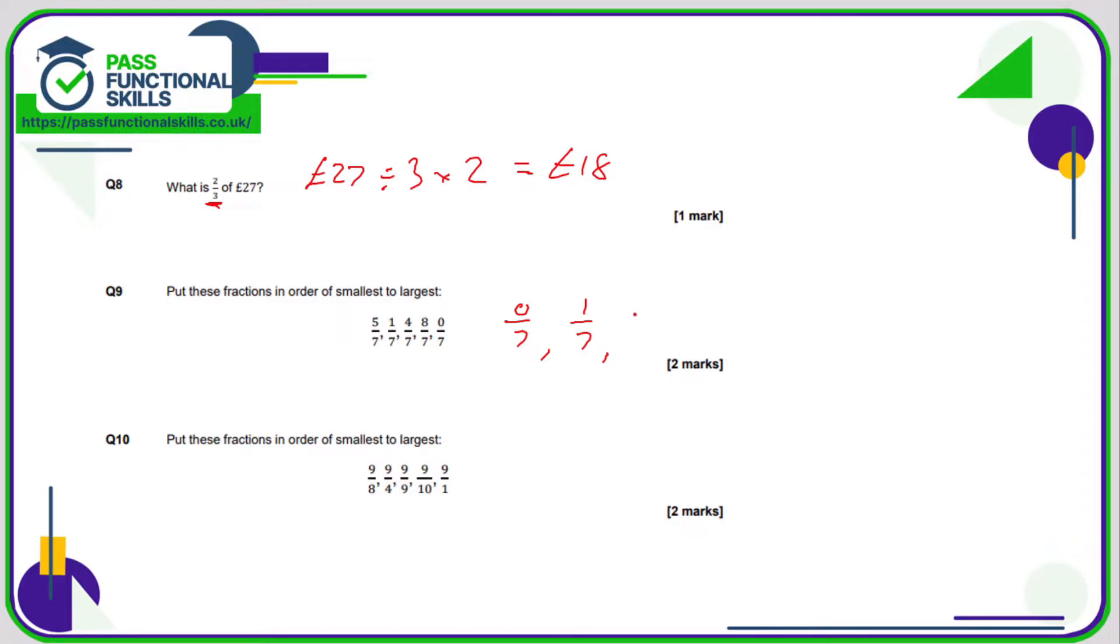Which is less than four out of seven, which is less than five out of seven, which is less than eight out of seven. Although eight out of seven doesn't really make sense as a test score, we've got them in order, that's the main thing.